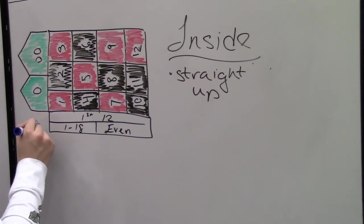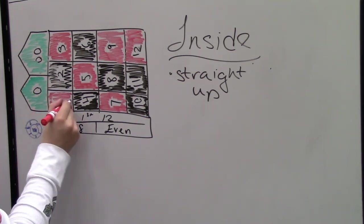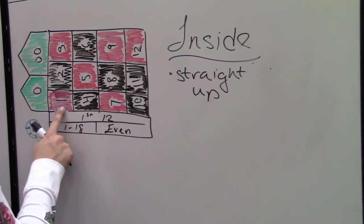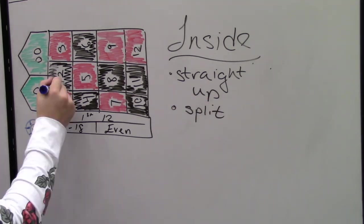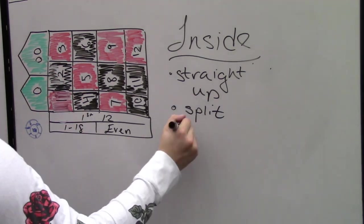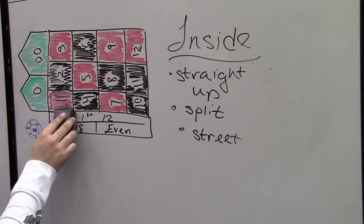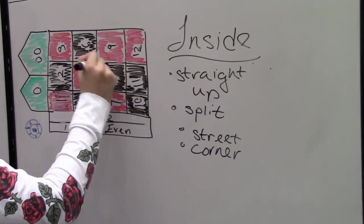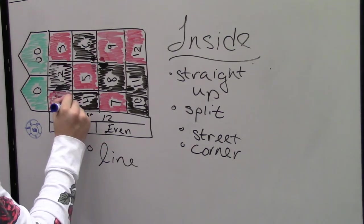A split, which is a bet on two adjacent numbers with a payoff of 17 to 1. A street, which is a bet on three numbers with a payoff of 11 to 1. A corner, which is a bet on four adjacent numbers with a payoff of 8 to 1. And a line, which is a bet on six adjoining numbers with a payoff of 5 to 1. There is usually a minimum on the inside bets.